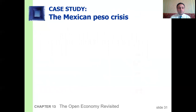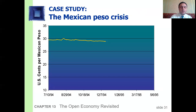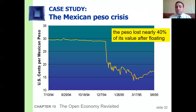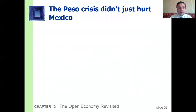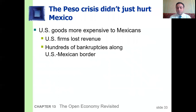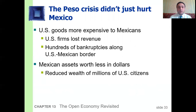Case study: the Mexican Peso crisis. The peso is the currency of Mexico. After 1994, the peso lost nearly 40% of its value after floating. U.S. goods became more expensive to Mexicans; U.S. firms lost revenue; hundreds of bankruptcies occurred along the U.S.-Mexico border. Mexican assets were worth less in dollars. This crisis didn't just hurt Mexico but also the United States and other countries with close ties, reducing the wealth of millions of U.S. citizens.